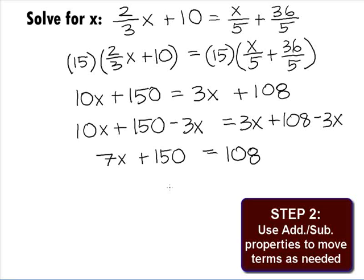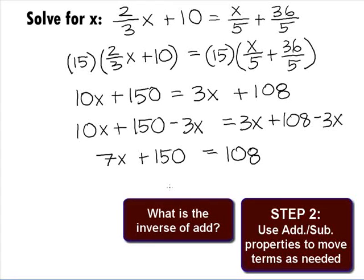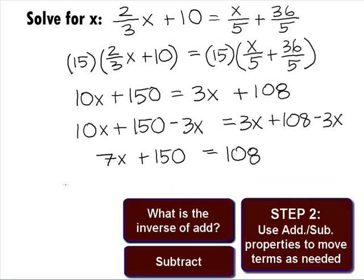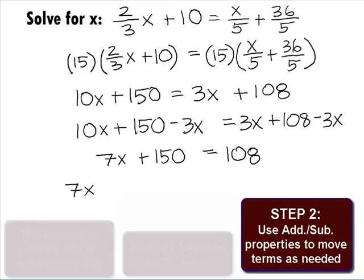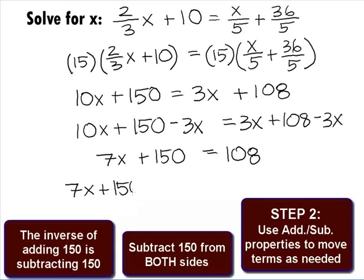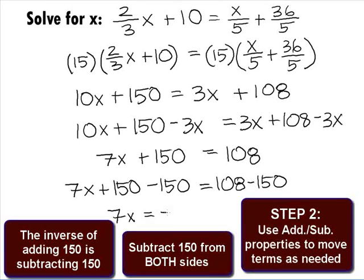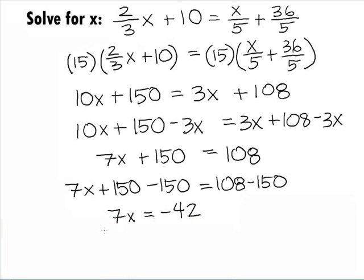Let's move the constant term 150 to the other side. What is the inverse of add? Subtract. So we need to subtract 150 from both sides. We'll have 7x plus 150 minus 150 on the left side equals 108 minus 150 on the right side. On the left side, the 150s cancel and we're left with 7x equals and on the right side, that difference is negative 42.